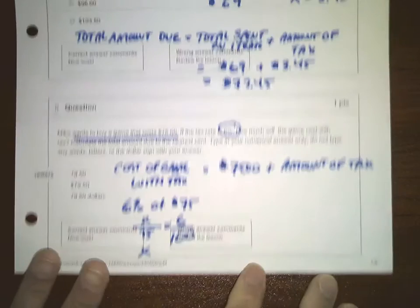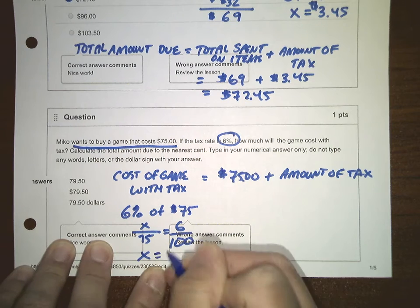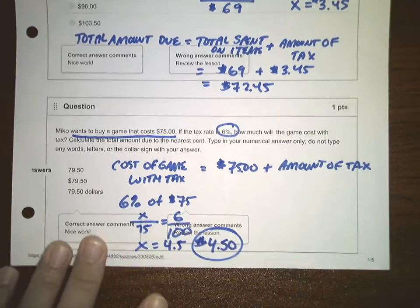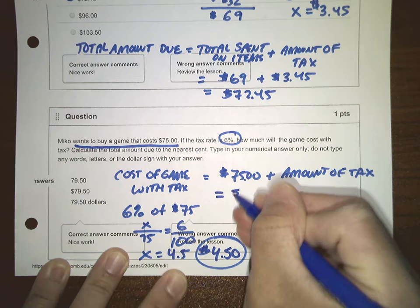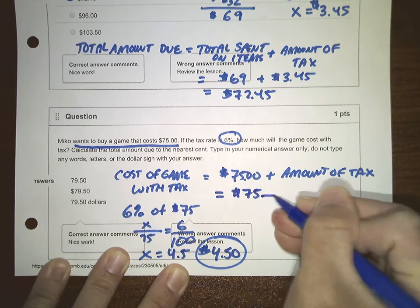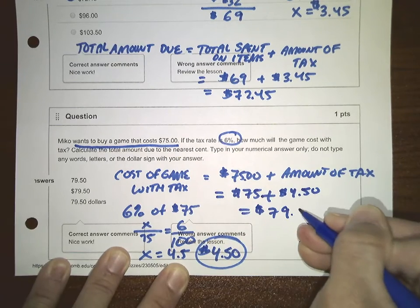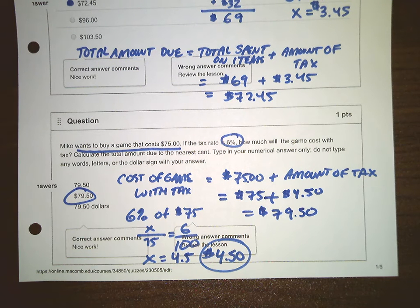That is $4.50, so the cost of the game for Miko will be $75 plus $4.50, which is $79.50. That's more than I would pay for a game, but that's okay — Miko must be loaded.